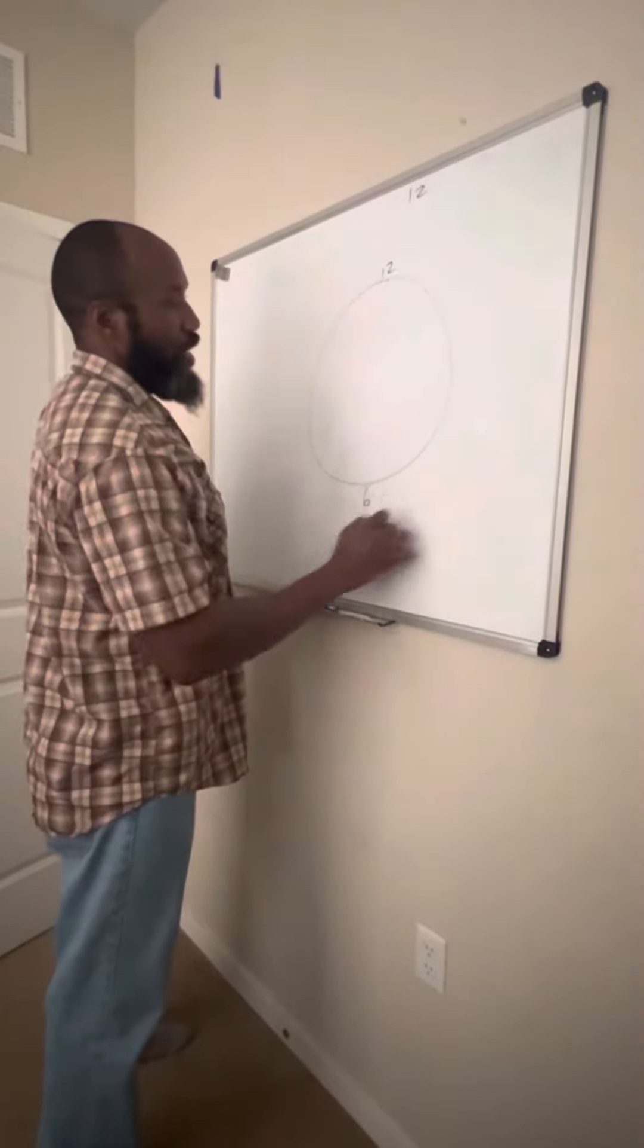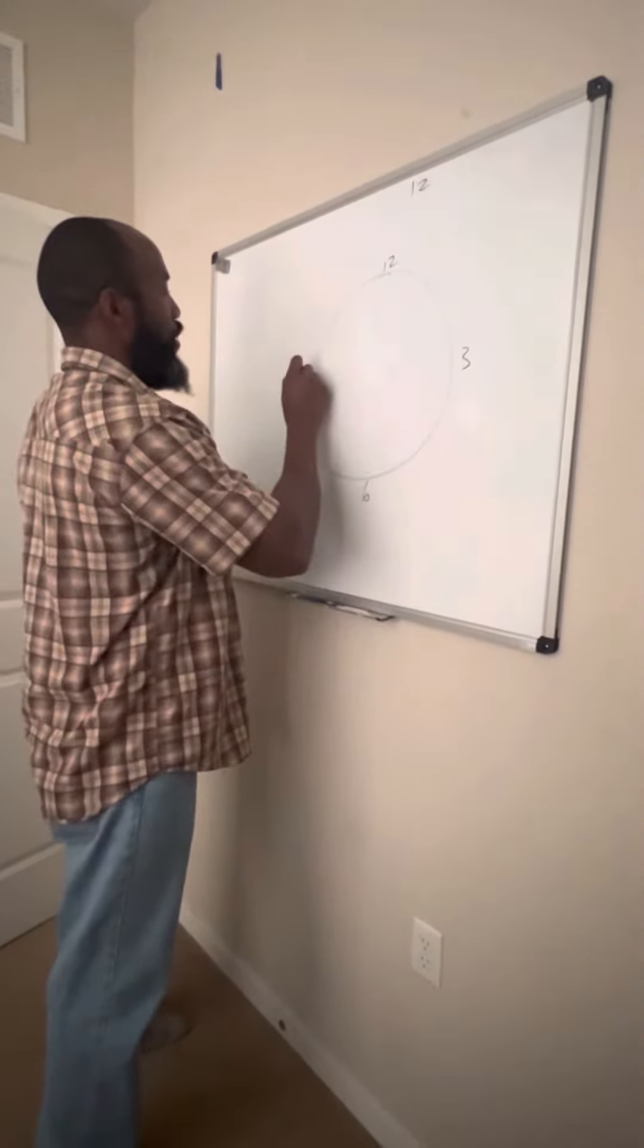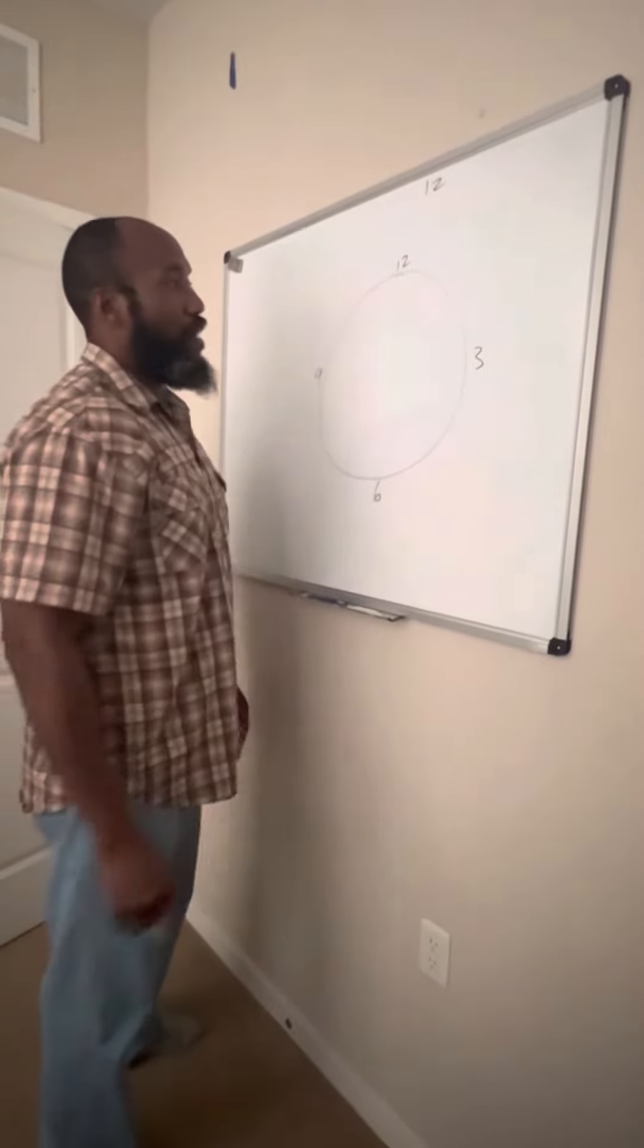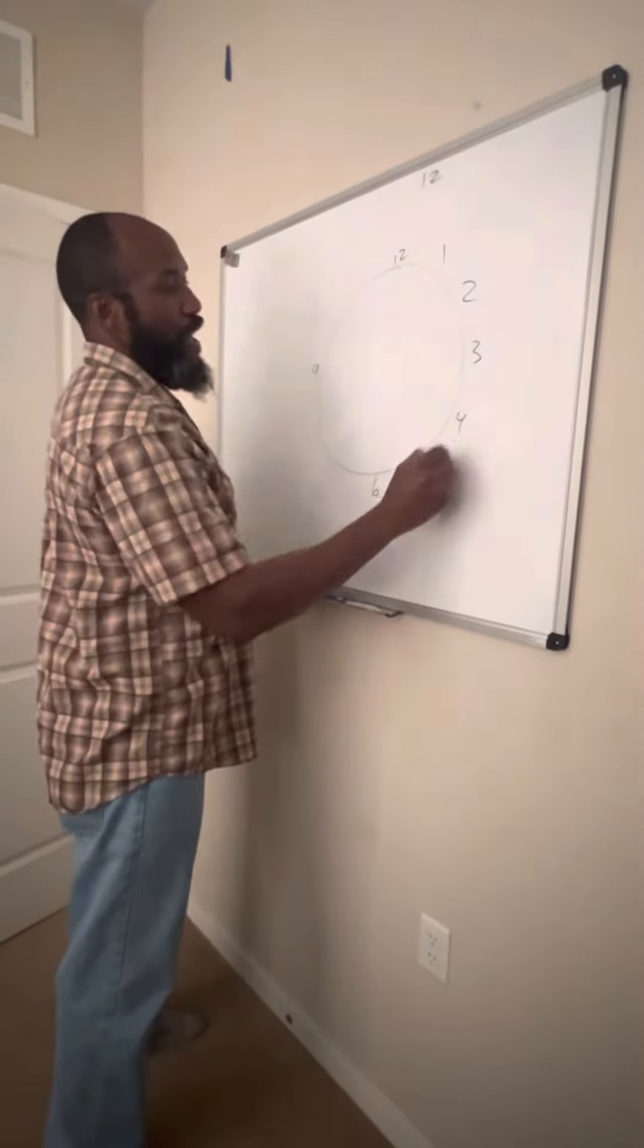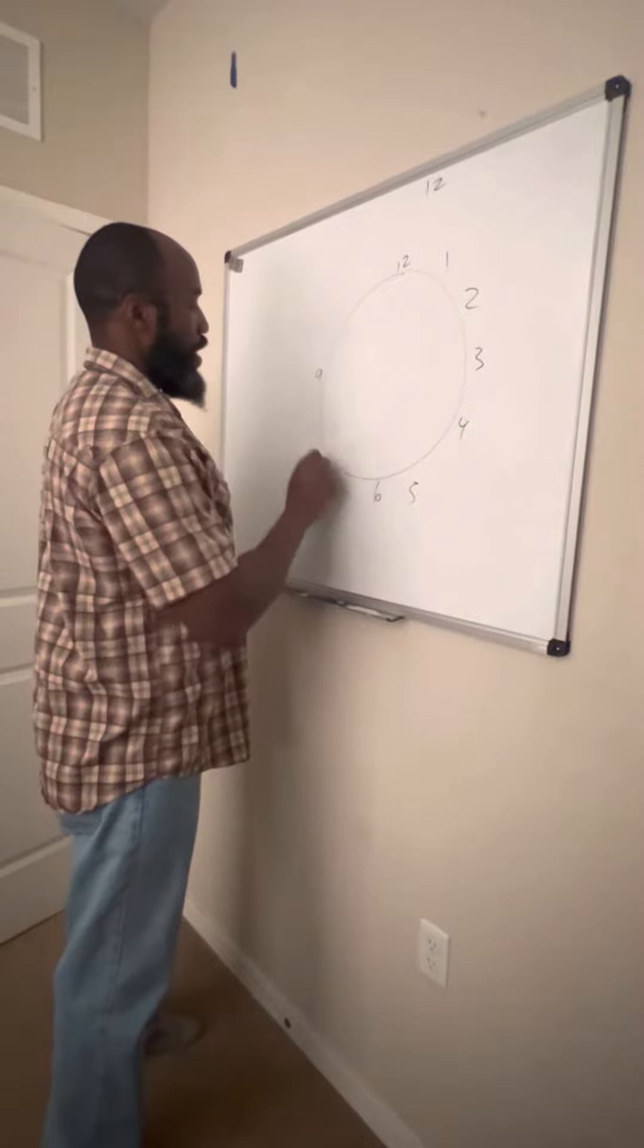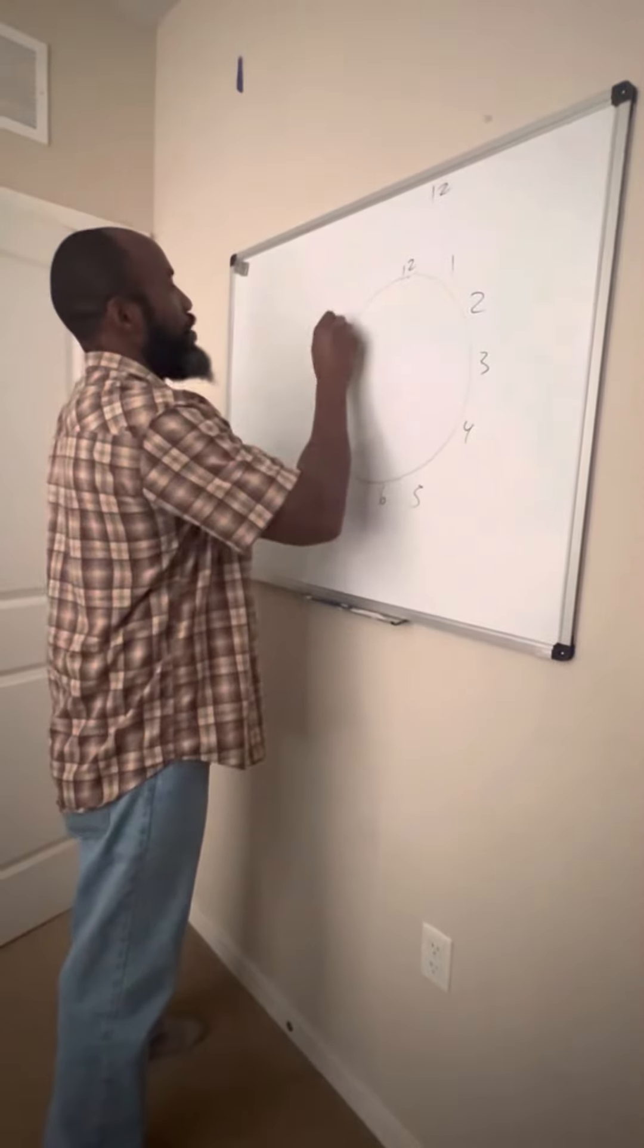The easier way to do a clock is to go ahead and put your numbers down. Of course, that'd be one and two, that's four and five, seven and eight, 10 and 11.